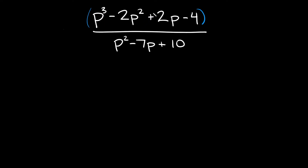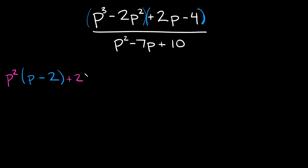To factor by grouping, take the first two terms in one set of parentheses and the last two terms in another, then factor each group individually. For the first group, p cubed minus 2p squared: we can pull out p squared, leaving p minus 2 inside. For the second group, 2p minus 4: we can factor out a positive 2, and dividing through by 2 leaves p minus 2 inside. So we have p squared times (p minus 2) plus 2 times (p minus 2).